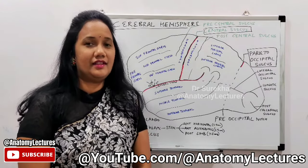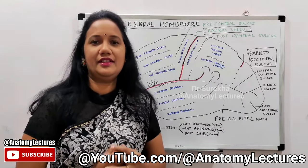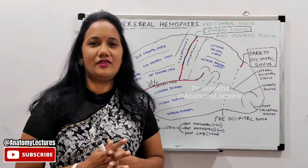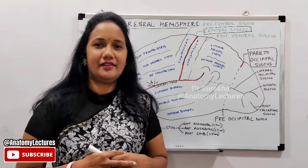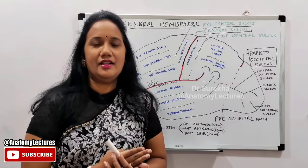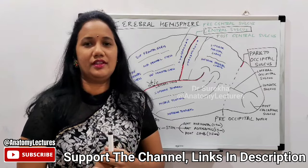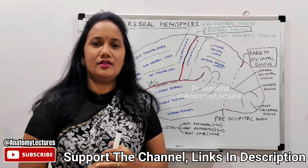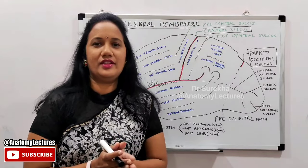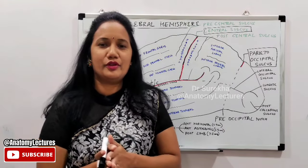The cerebral hemispheres are extensively developed in man. In order to fit into the rigid cranial cavity, these cerebral hemispheres undergo convolutions, and these convolutions are separated by means of fissures. The elevated convolutions are referred to as the gyri, and the fissures which separate them are referred to as the sulci. Today we are going to discuss the various sulci and gyri present on the superolateral surface of the cerebral hemisphere, which has a superolateral surface, a medial surface, and an inferior surface.